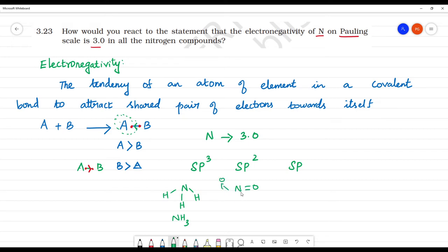In sp2 hybridization there are single and double bonds. For sp hybridization, there's a triple bond like C triple bond N minus. So nitrogen can have single bond, double bond, and triple bond configurations.